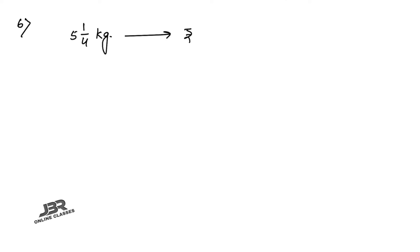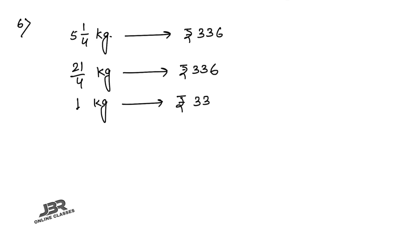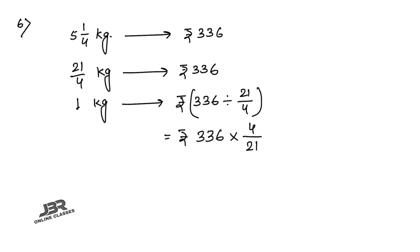Sum number 6: The cost of 5 whole 1/4 kg of apples is rupees 336. What is the rate per kg? Convert 5 whole 1/4 = 21 by 4 kg. So 21/4 kg costs rupees 336. Cost of 1 kg = 336 ÷ 21/4 = 336 × 4/21. 336 ÷ 21 = 16; 16 × 4 = rupees 64. The price per kg of apples is rupees 64.